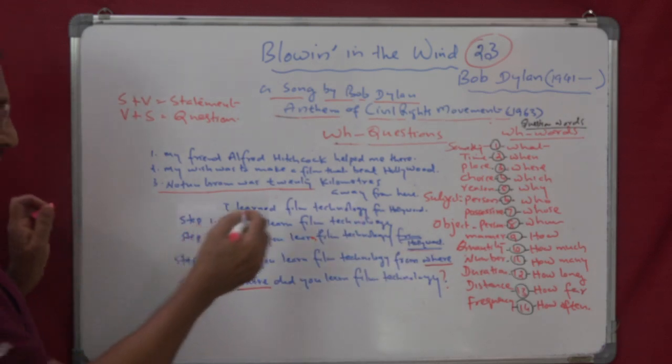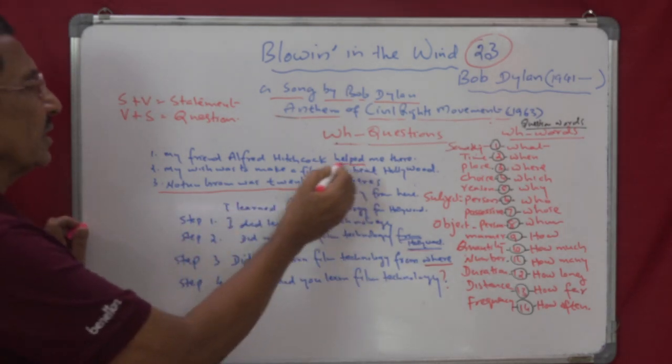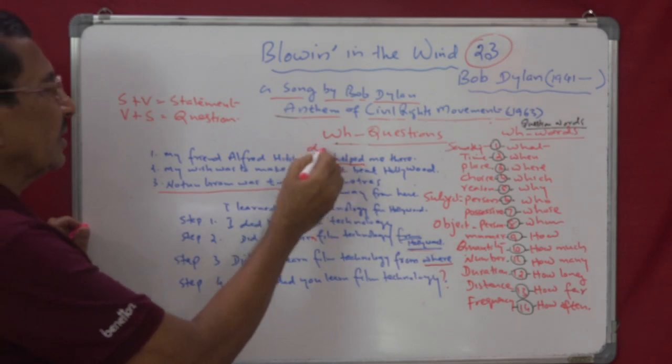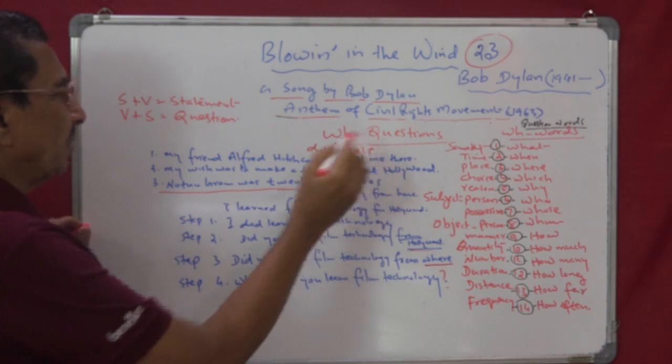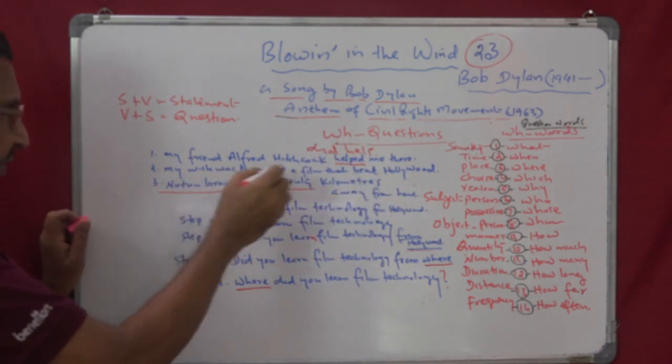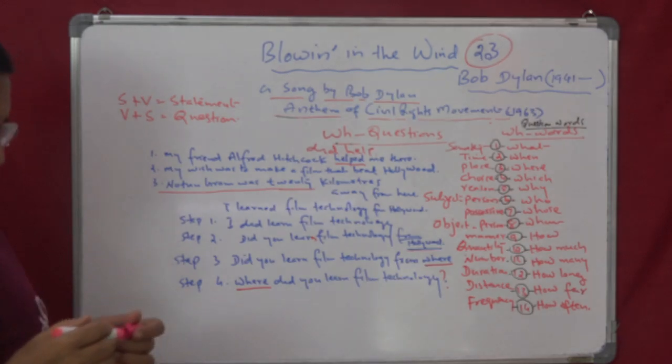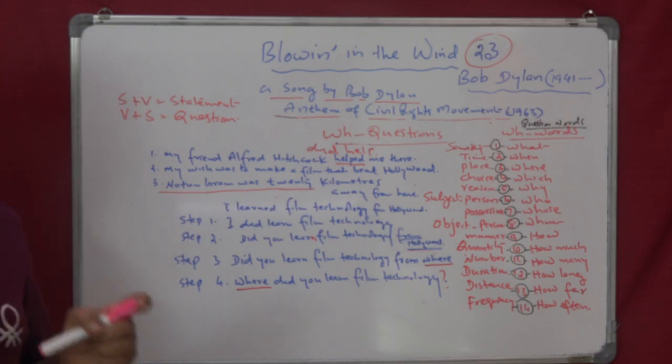My friend Alfred Hitchcock helped me here. So, here again, you have got the main verb, past tense. That will become did help. So, my friend Alfred Hitchcock did help me here. So, what is the answer you would like to get is my friend. So, for the person, what is the question word? Who.